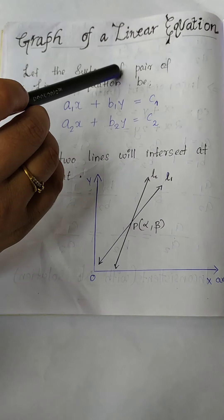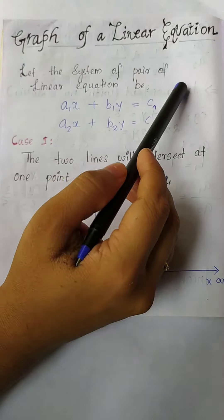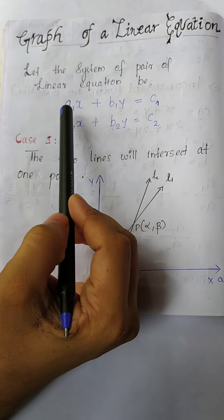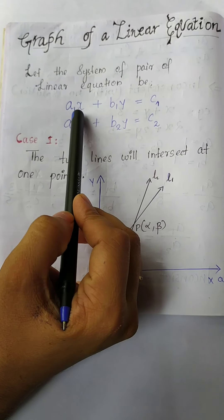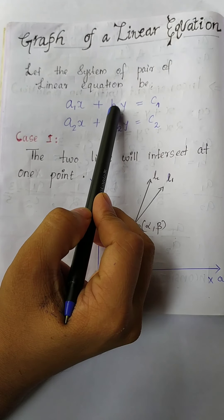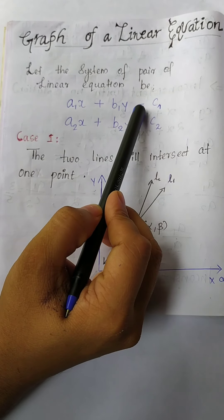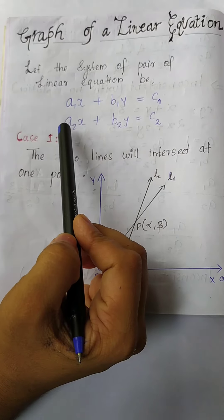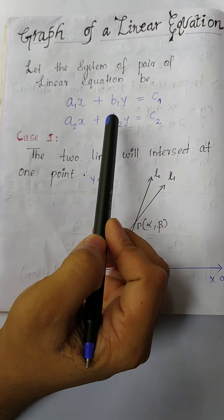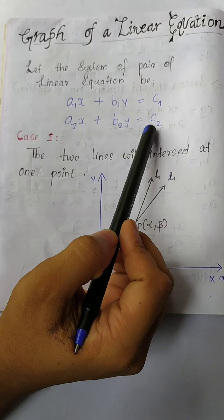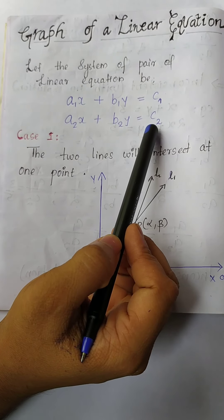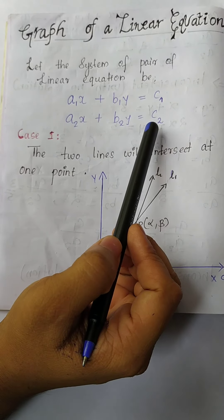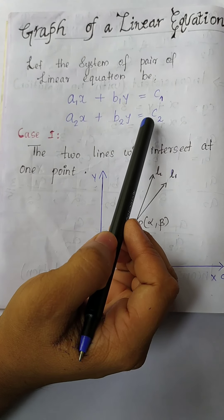Let the system of pair of linear equations be a₁x + b₁y = c₁ and a₂x + b₂y = c₂. These are the two pairs of linear equations.